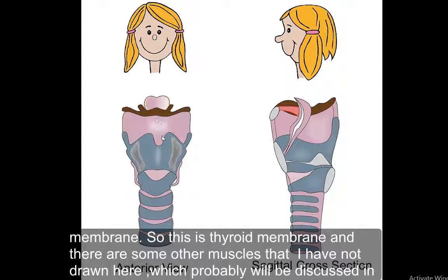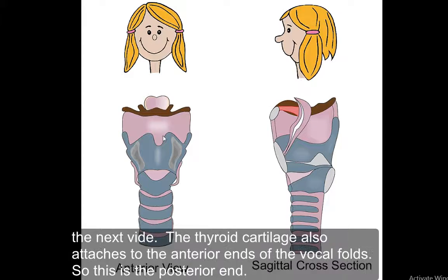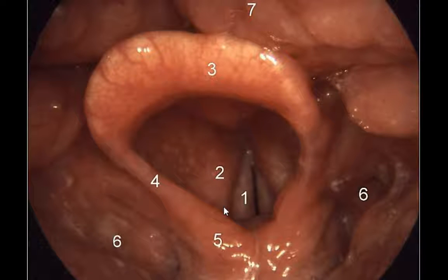There are some other muscles that have not been drawn here, which will probably be discussed in the next video. The thyroid cartilage also attaches to the anterior ends of the vocal cords — these are the anterior ends of the vocal cords and this is the posterior end.